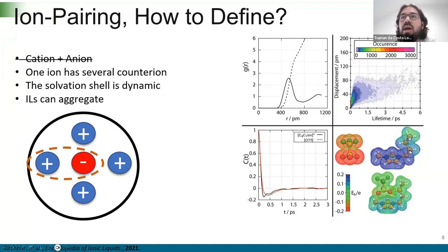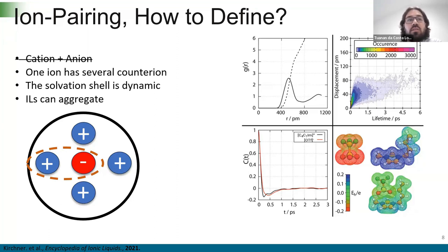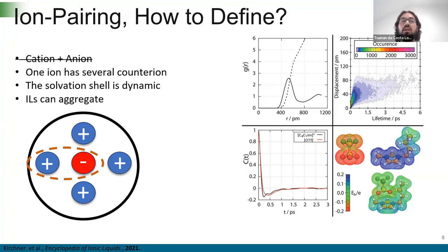What is the ion cage? We can take the first minimum in the RDF as a cutoff, and we define this cutoff around the center ion. Every counter-ion within this cutoff is part of the cage — this is the ionic cage of the system. But we have to keep in mind that this cage is dynamic: the cage can move, the cage can break, and we can have different cages in the system. Also, ionic liquids can aggregate, meaning the cages can come together and the situation can change.